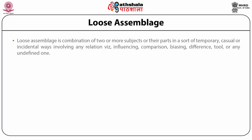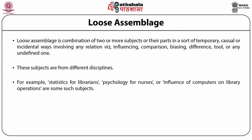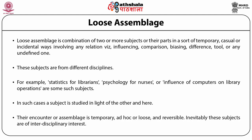This trend has happily been counterbalanced by what we call interdisciplinary studies for the growth of knowledge, a trend set after World War II. What led to this trend is team and relay research, close cooperation among scholars, and availability of subject consultants as in a university. Crossbreeding of subjects has yielded such subjects as chemical physics, biophysics, social journalism, or medical geography. Loose assemblage is the combination of two or more subjects in a sort of temporary, casual or incidental way, involving any relation — namely influencing, comparison, biasing, or any unspecified one. These subjects are from different disciplines.